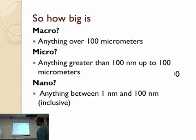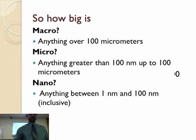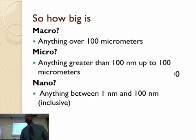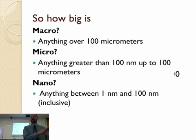And nano? It's a range — between one and 100 nanometers. When you get below one nanometer, things get really weird. You have individual molecules, so it becomes more molecular chemistry than nanotechnology or nanoscience.